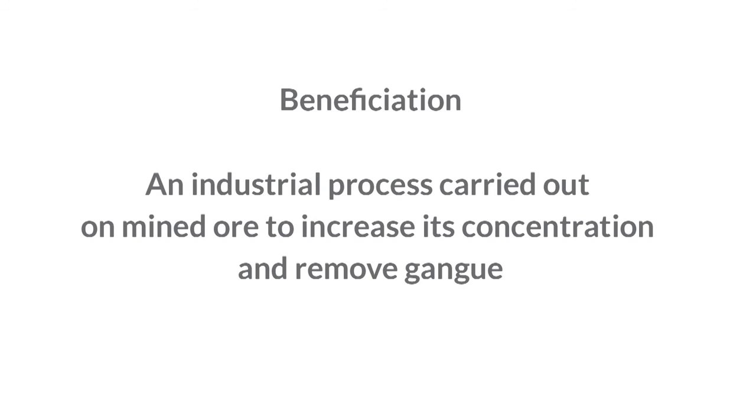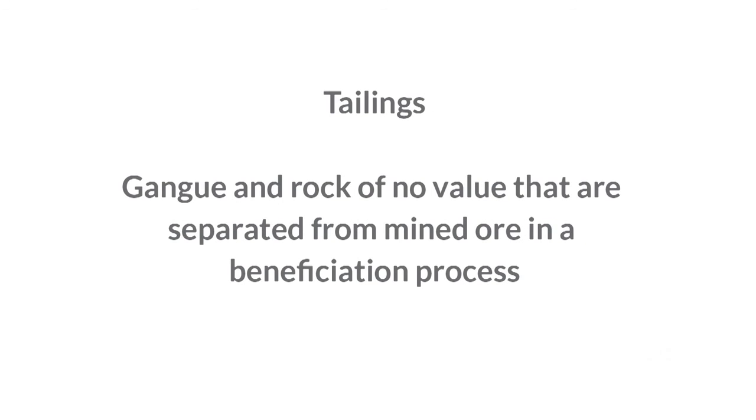Beneficiation is an industrial process carried out on a mined ore to increase its concentration and remove gang. Tailings is a term given to gang and rock of no value that are separated from mined ore in a beneficiation process, and which usually contain residues of the extracted ore minerals. In the next topics we will look at the mining process in greater detail, and in the meantime I encourage you to visit the discussion forum and introduce yourself to the other students taking this course.